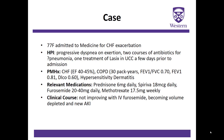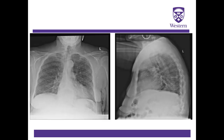In the few days during her admission prior to the POCUS consultation, she had not been improving with IV furosemide. She was becoming volume depleted and now had an acute kidney injury. The medicine consultant asked us to see this patient in hopes of finding another reason for her hypoxemia. Her chest x-ray just prior to the consultation shows interstitial markings diffusely in both lung fields, and a left lower lobe opacity seen better on the lateral.